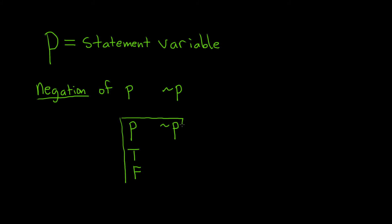And not P is the negation of P, so it takes on the opposite truth value. So if P is true, then the opposite of that would be false. It's called the negation of P. And if P is false, well the opposite of false is true.